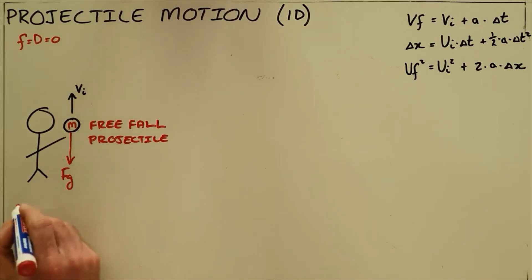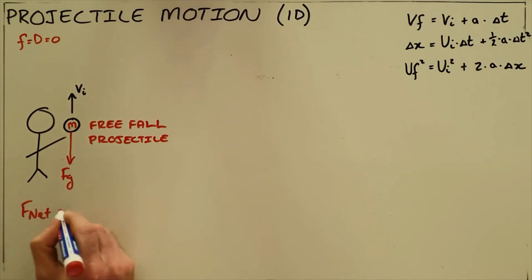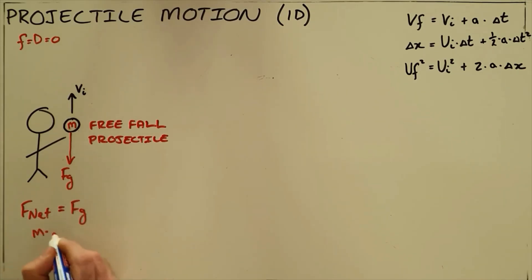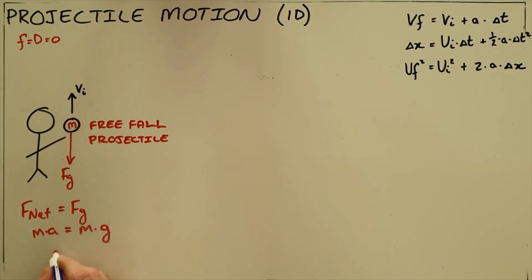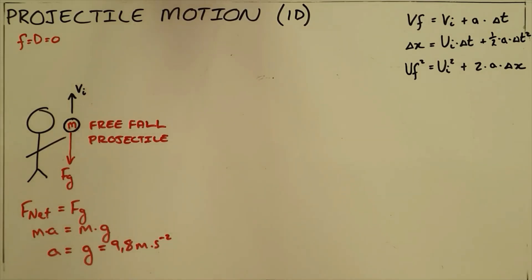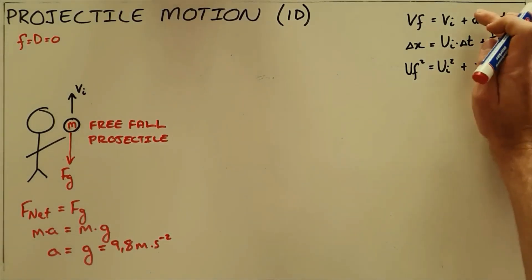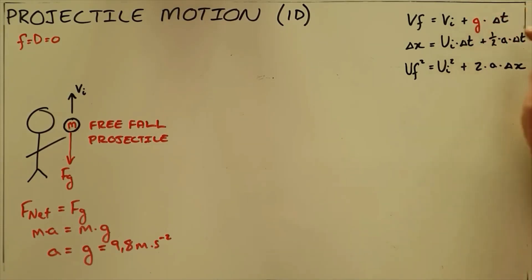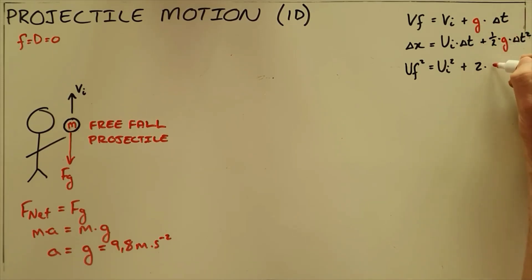Since gravity is the only force acting on this object, the net force equals the force of gravity. This means we can calculate the object's acceleration and see that it is always a constant — Earth's gravitational acceleration constant. We can now rewrite our equations of motion, replacing the variable for acceleration with this gravitational constant.